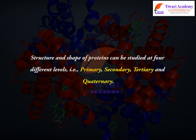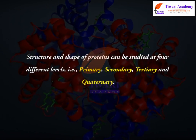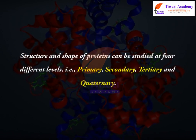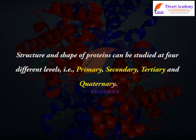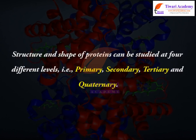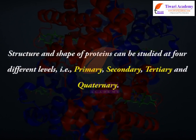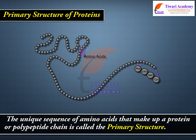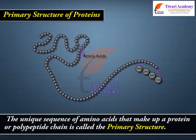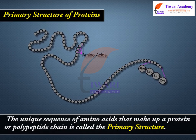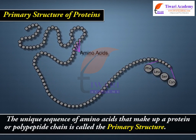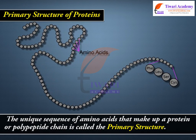Structure and shape of proteins can be studied at four different levels: primary, secondary, tertiary, and quaternary. Primary structure of proteins: the unique sequence of amino acids that make up a protein or polypeptide chain is called the primary structure.